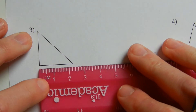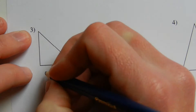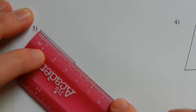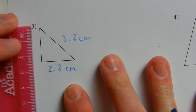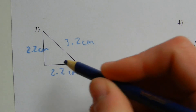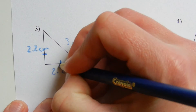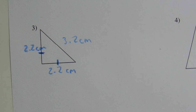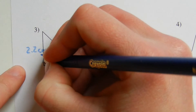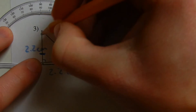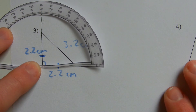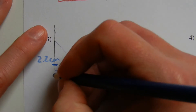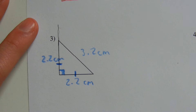For number three, continuing with centimeters, we have 2.2 centimeters, approximately 3.2 centimeters, and 2.2 centimeters again. Since 2.2 equals 2.2, we have two sides of equal measure, which means this is an isosceles triangle. Looking at this angle, if we extend the line up, it intersects the 90-degree mark on our protractor — therefore this angle is a right angle. For number three we have a right isosceles triangle.